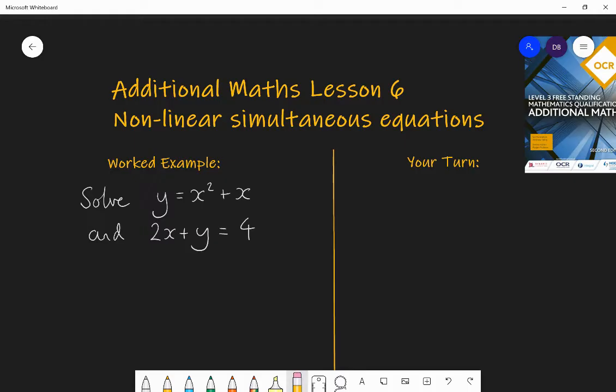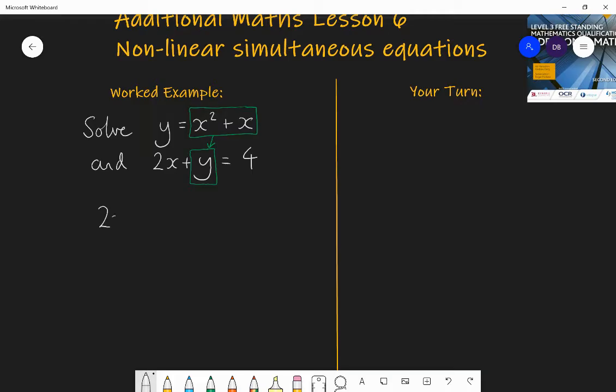So we have these two equations, and what we're going to use is a method where you substitute information from one equation into the other equation. In the first equation, I am told what y is equal to. So y is equal to x squared plus x. That means that I can replace the y in the second equation with that value, that equivalence of y. So I can replace y in the second equation with x squared plus x. We are substituting into the second equation information from the first equation.